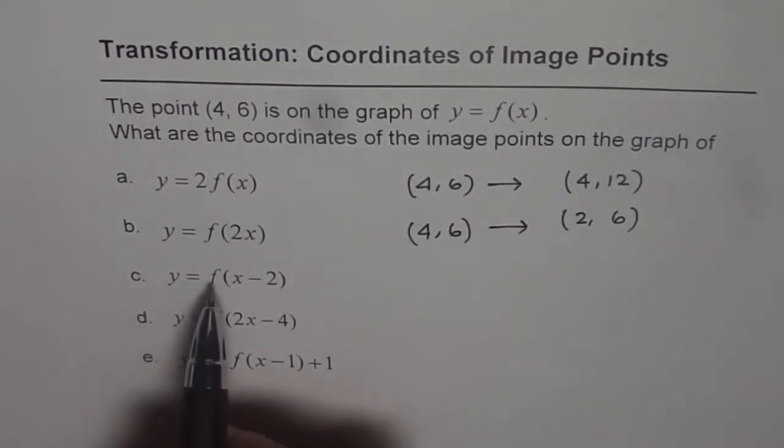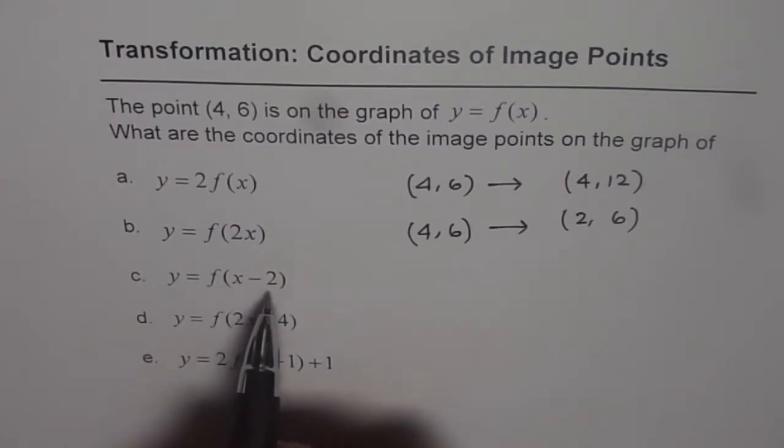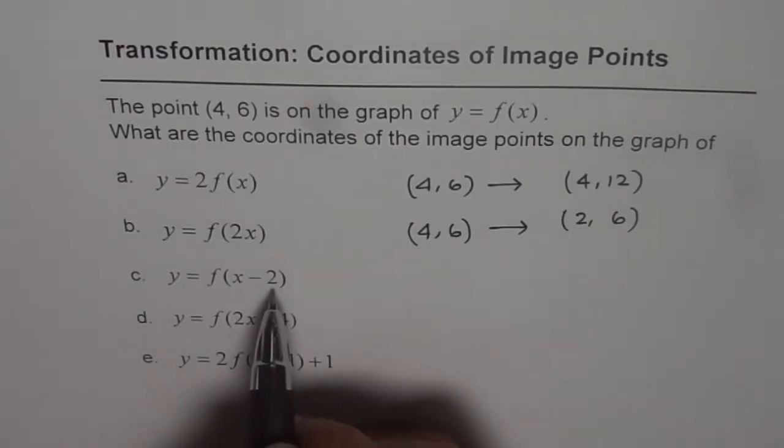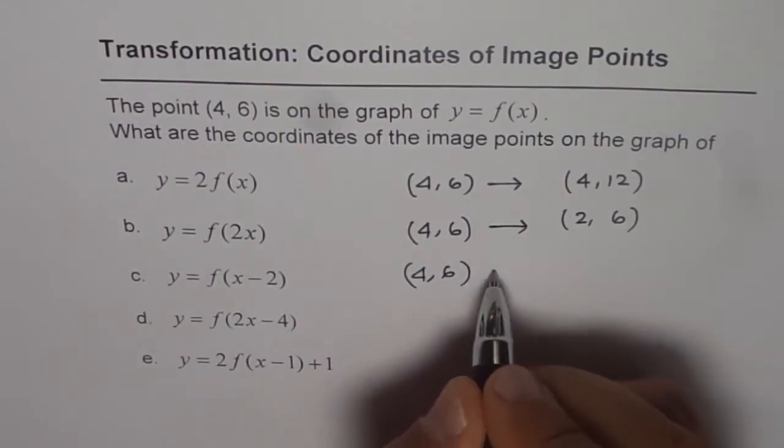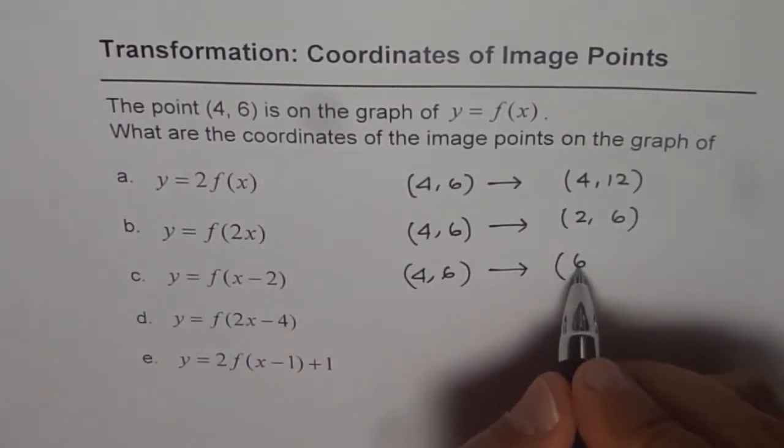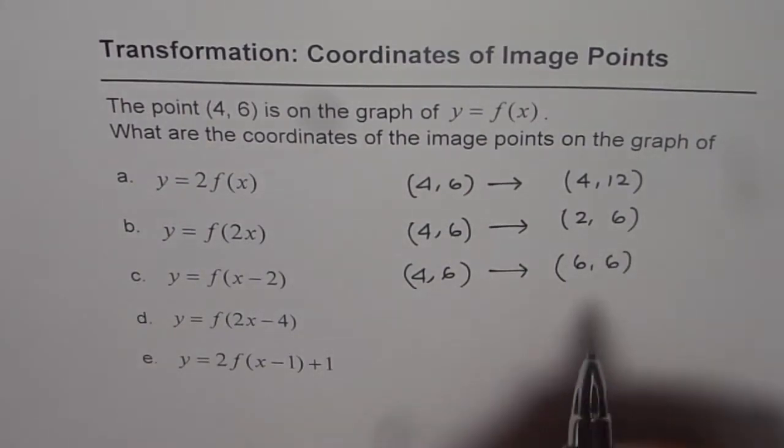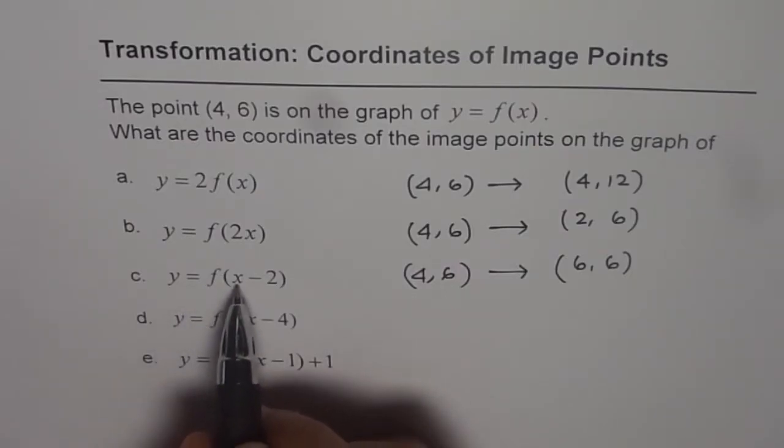Part c is y = f(x-2). x minus two means a transformation which results in horizontal translation of two units to the right. The x-coordinate gets increased by two; y remains the same. So the original point (4, 6) gets transformed: four plus two gives six. (6, 6) is the image point on the graph of y = f(x-2).